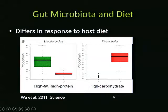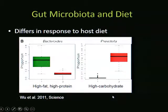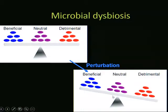When gut microbes shift in terms of who's present, their functions also shift. It's plausible that gut microbial communities change in response to host diet, with shifting functions that help hosts deal with diet changes. However, a dynamic system may not always be beneficial. Most shifts maintain balance between beneficial, neutral, and detrimental microbes. But a large enough perturbation—a major diet change or shift in health status—can disrupt this balance, leading to more detrimental microbes and health problems.